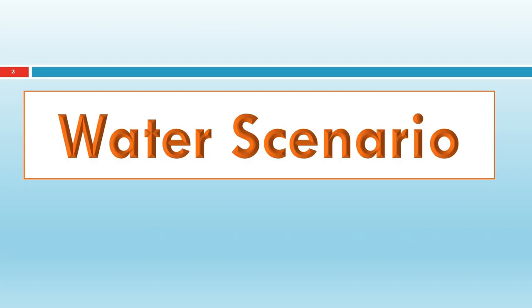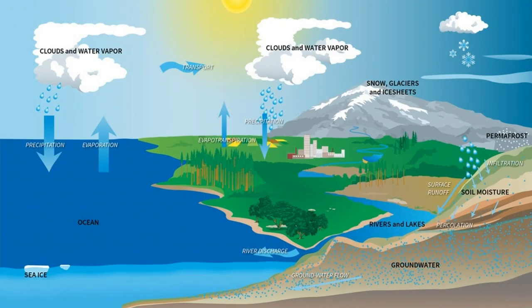Let's start our discussion with the current water scenario across the world as well as in India. In order to understand the water scenario, we need to understand the water cycle. This is a very basic but important natural phenomenon — because of this phenomenon, the existence of human beings and all living species is possible on this earth. If there is any damage to this water cycle, the entire ecosystem will collapse. Nature provides water in a very recycled and proper way for our consumption as well as for ecological needs.